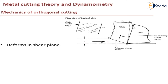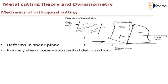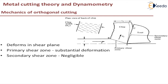Once the material nears the shear zone, the deformation will take place. That is, in the primary shear zone, there is a substantial deformation taking place. There is essentially no further plastic flow as the chip proceeds up the face of the tool. The deformation happening in the secondary shear zone is negligible.